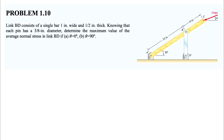Welcome back. In today's question we have link BD that consists of a single bar, one inch wide and one half inch thick. Each pin has a diameter of three-eighths of an inch. We need to determine the maximum value of the average normal stress in link BD under two conditions: theta equals zero, and theta equals 90 degrees.